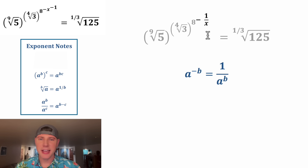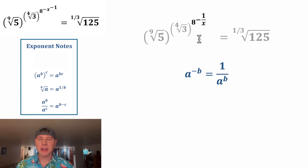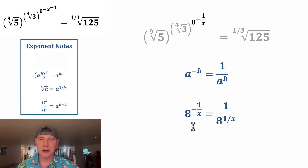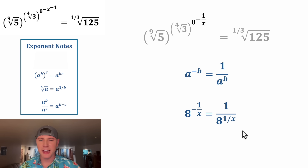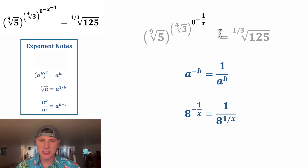Next, let's bring in the negative and bring in the eight. Now we have eight to the power of negative one over x. Eight to the power of negative one over x will equal one over eight to the power of positive one over x, so we can change this into that.